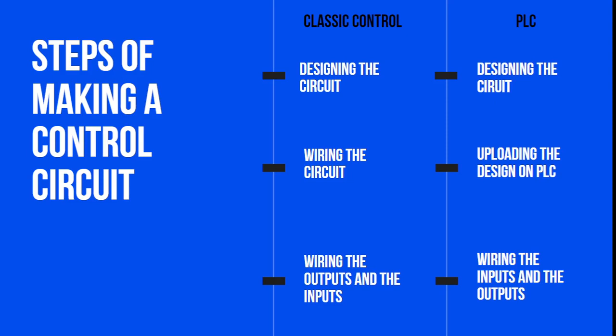In the modern way using PLC: the first step is designing the circuit, just like classic control. The second step is uploading the design onto the PLC — we design the circuit on a computer or PC, then upload it to the PLC device. After that, we wire the inputs and outputs directly to the PLC, which replaces the wired control circuit.